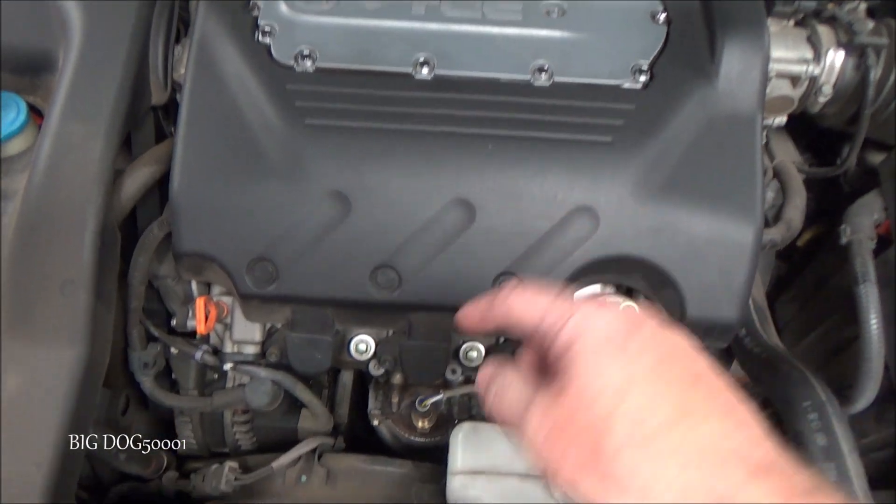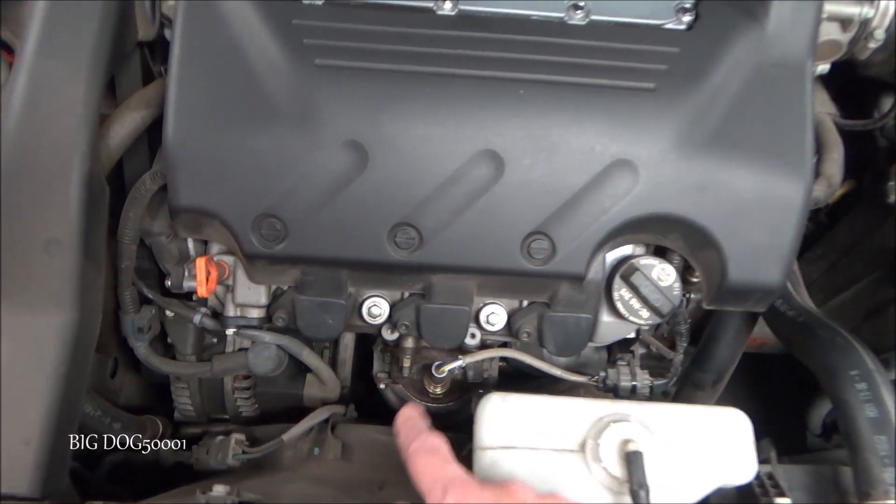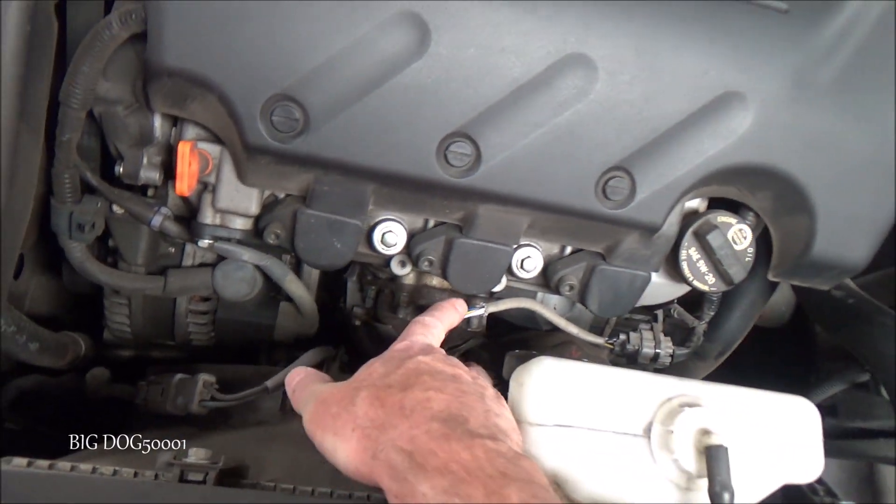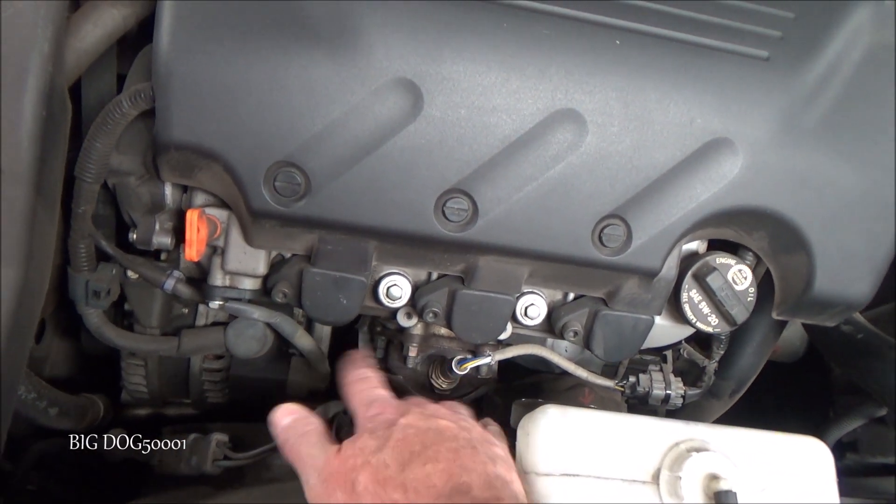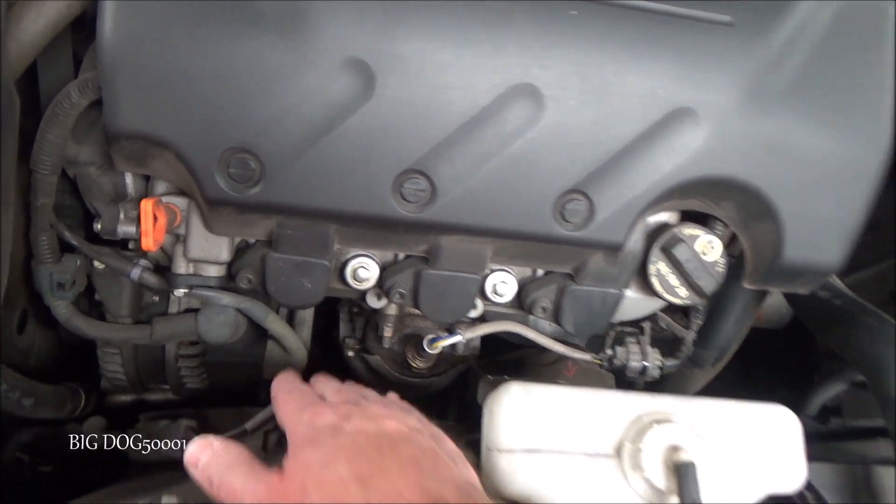Now on each bank we have a catalytic converter and two oxygen sensors. We can see our catalytic converter on this side. It's right here. And then one of the oxygen sensors is on the top, one is on the bottom. So one is before our catalytic converter and one is after it.